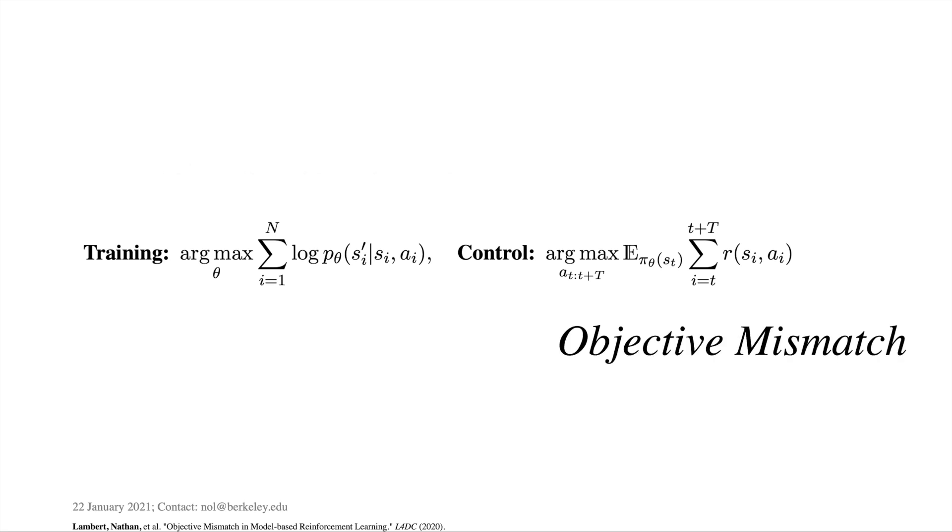We coined this objective mismatch, which is present in any model learning for control framework, but most prevalent when iterative data adds collection bias.